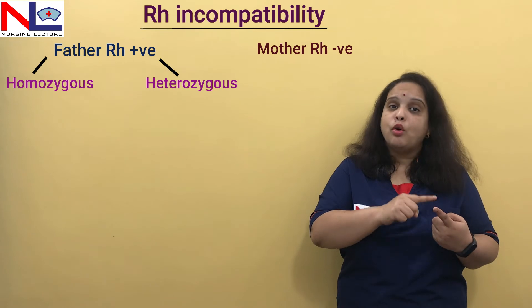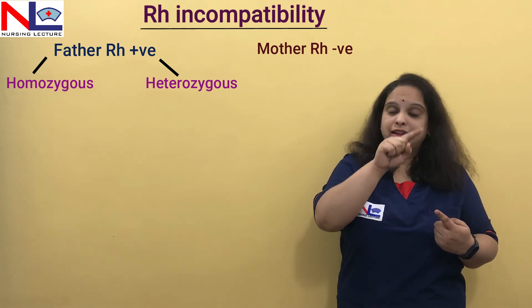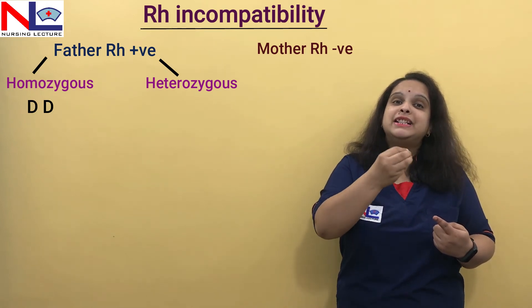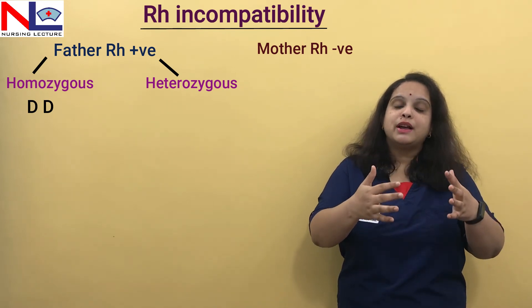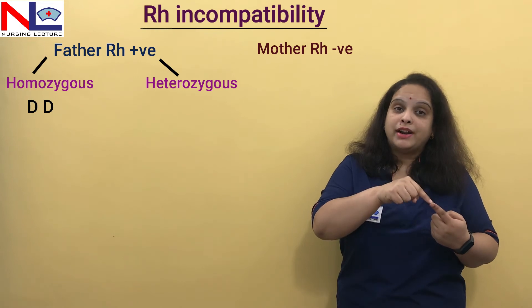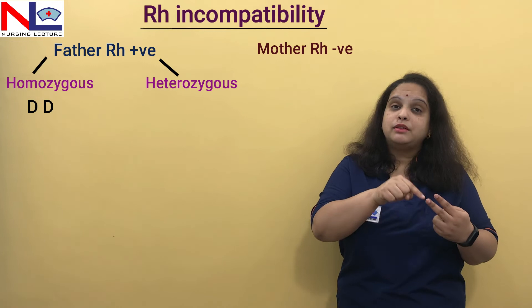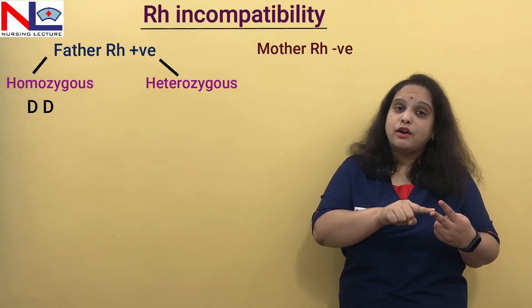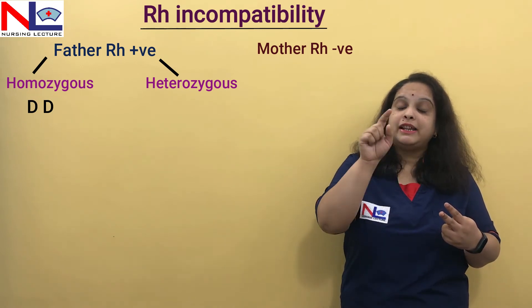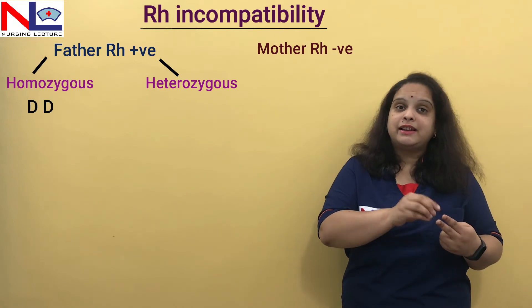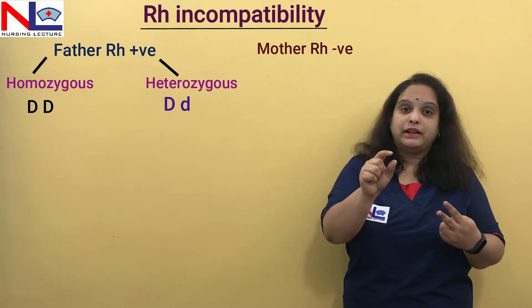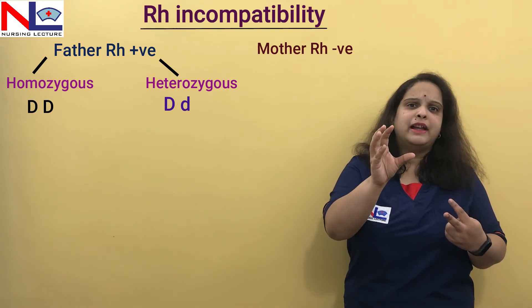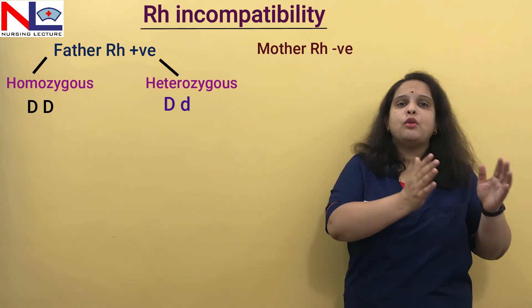A father with a homozygous genotype is written as capital DD, meaning both alleles carry the RH antigen. We know chromosomes are present in pairs in our body, so on chromosome number one, both alleles carry the RH antigen — that makes the person homozygous, DD. For a heterozygous father, the genotype would be capital D and small d: capital D means the RH antigen is present on that allele, and small d means the RH antigen is absent on that allele.